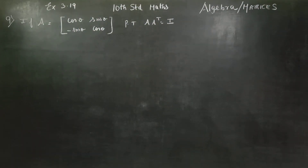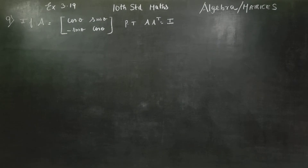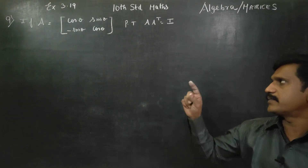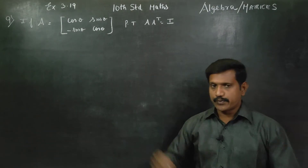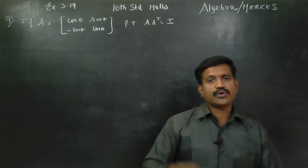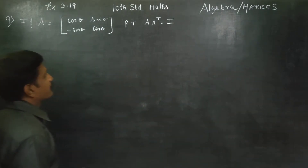Hello 10th standard students, I am Mitruh Karnagaran. In exercise number 3.19, sum number 9: if A matrix is equal to [[cos theta, sin theta], [-sin theta, cos theta]], prove that A into A transpose is equal to I.